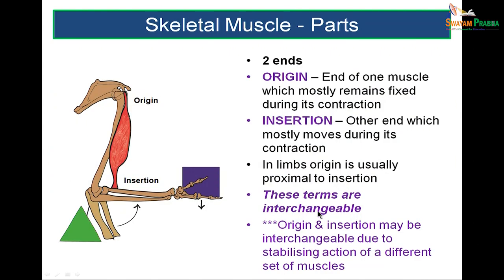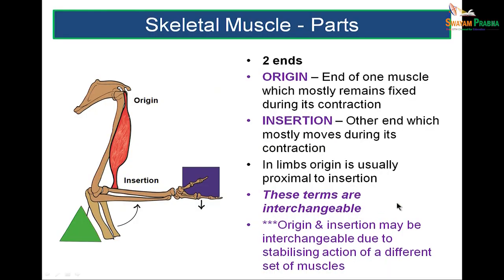Coming to the parts of skeletal muscle: skeletal muscle has two ends — origin and insertion. The origin is the part of the muscle that remains more fixed, and insertion is the part which moves. These terms are interchangeable, depending on which part is fixed and which part is moving.